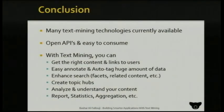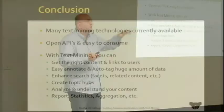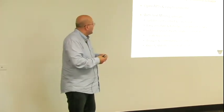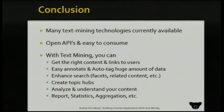Text mining allows you to create more relations between content. As you saw earlier, you can bind a Flickr photo with a text you wrote together — it creates value. You can make search work better using facets, create related content, and easily create topic hubs. Imagine you have a website with hundreds of thousands of pieces of content and want to see what the most-used topic is — you can easily have that. It makes it easier to understand your content, gather statistics, and aggregate it.